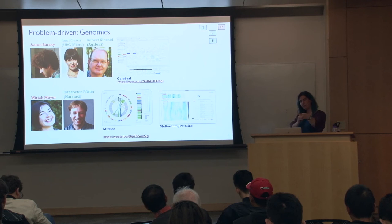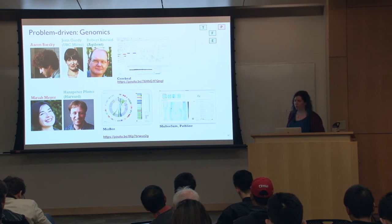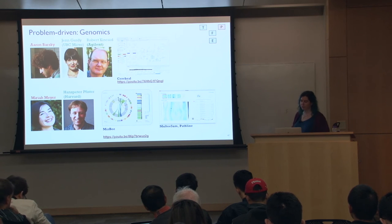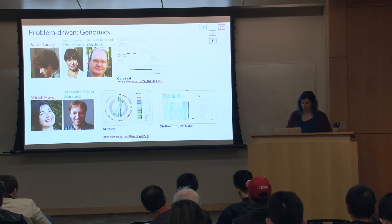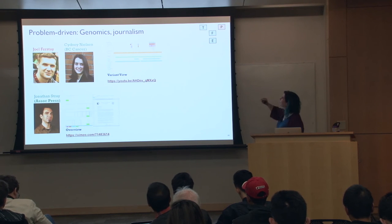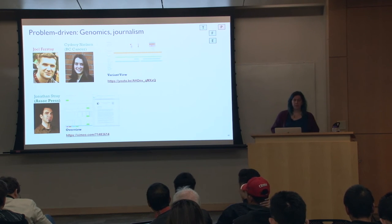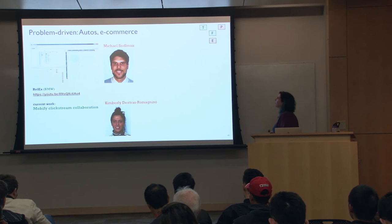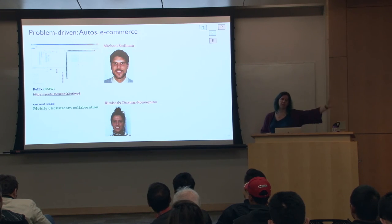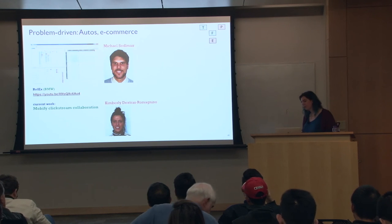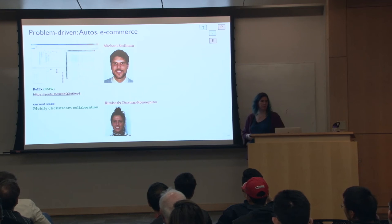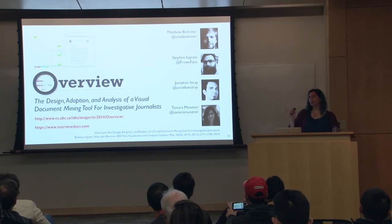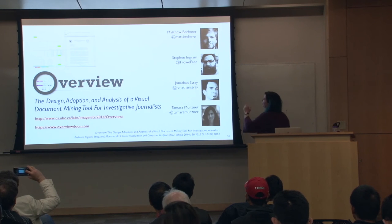These genomics collaborations tend to be with people in academia or in industry — for example Agilent, which makes the sequencing machines many biologists use for whole genome sequencing. Another project, Variant View, was again with people at BC Cancer looking at genomic data. There's also very different domains like journalism — a project with Jonathan Stray of the Associated Press. And other domains like in-car networks for car designers and e-commerce click stream data. I'm going to pick one of these to go into more detail — the project with the journalists: Overview.